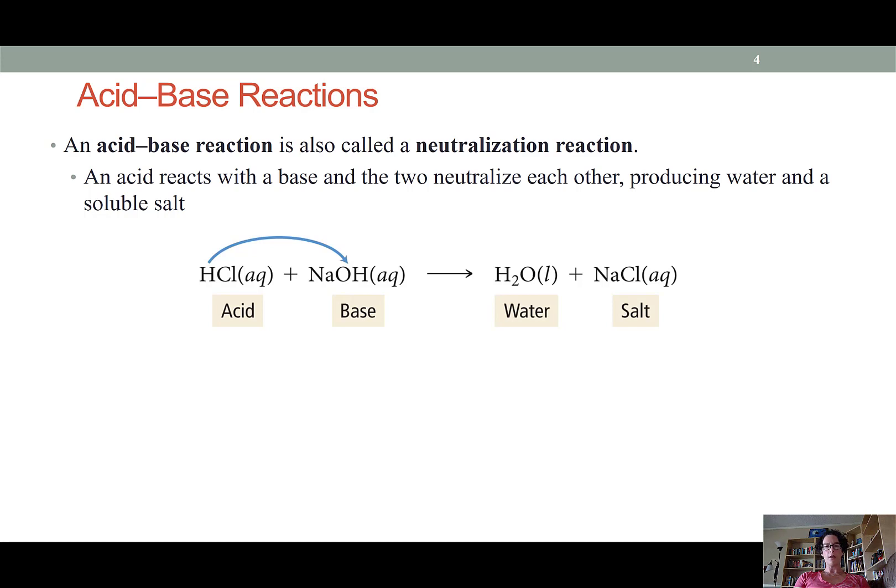The anion from the acid and the cation from the base are also going to combine to form an ionic compound, sometimes called in slang a salt. So here we're seeing a reaction between hydrochloric acid and sodium hydroxide producing water and sodium chloride as the salt.